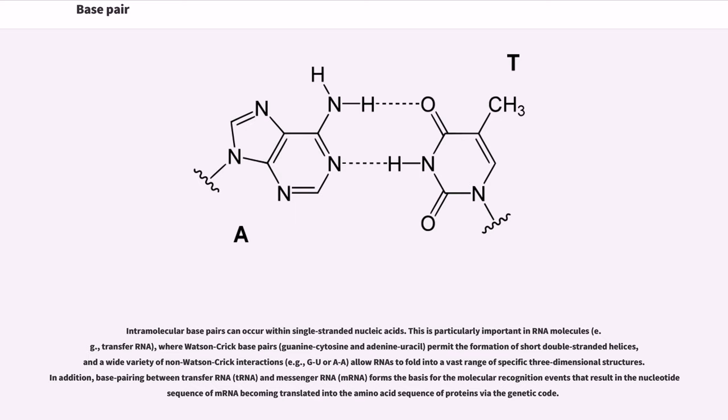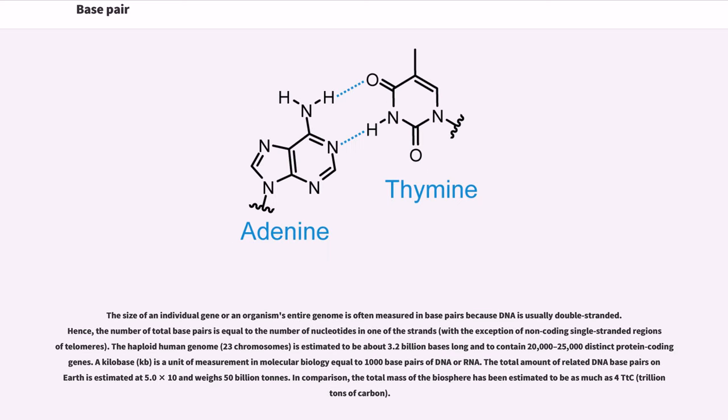The size of an individual gene or an organism's entire genome is often measured in base pairs because DNA is usually double-stranded. Hence, the number of total base pairs is equal to the number of nucleotides in one of the strands, with the exception of non-coding single-stranded regions of telomeres. The haploid human genome (23 chromosomes) is estimated to be about 3.2 billion bases long and to contain 20,000-25,000 distinct protein-coding genes.